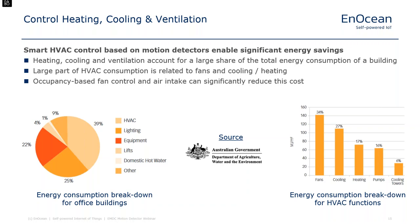Within HVAC systems, the majority of energy goes to fans — devices distributing warm or cool air that can be controlled quite easily based on room occupancy. The key takeaway is that smart HVAC control based on motion detectors provides significant energy savings. Simply turning down ventilation when nobody's in a room, turning down heating when the room is empty, or switching off ventilators when a window is open can dramatically reduce energy consumption.